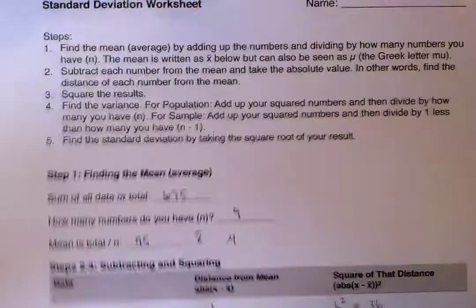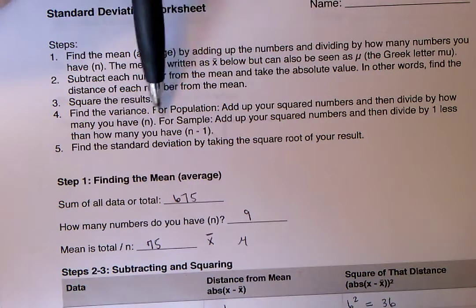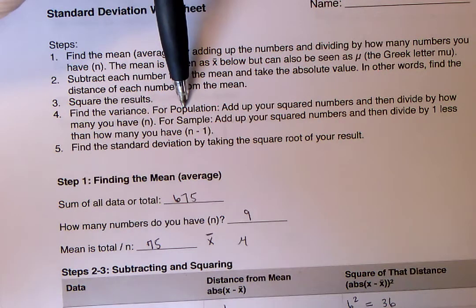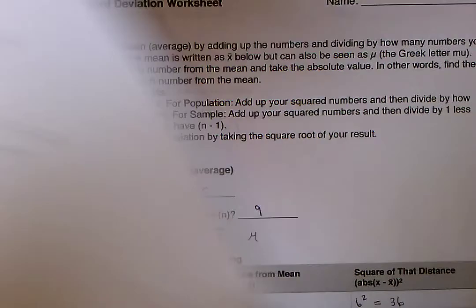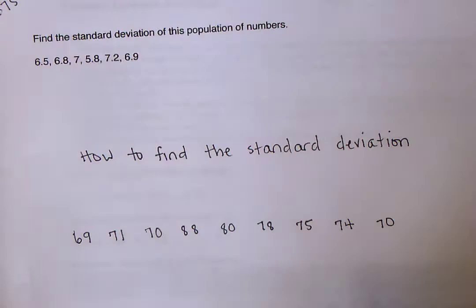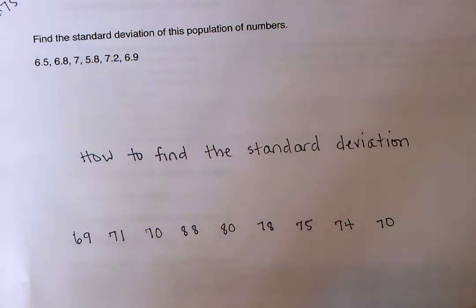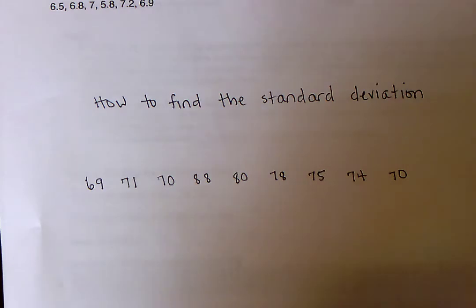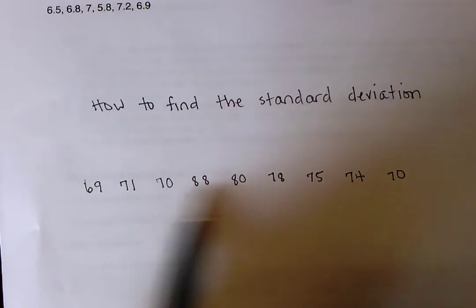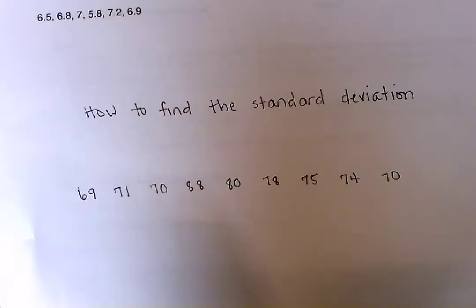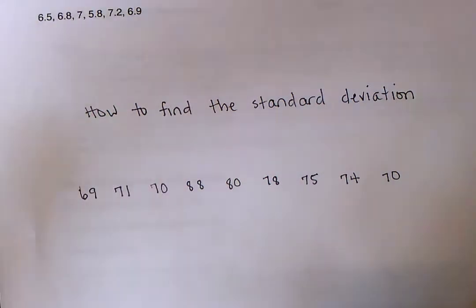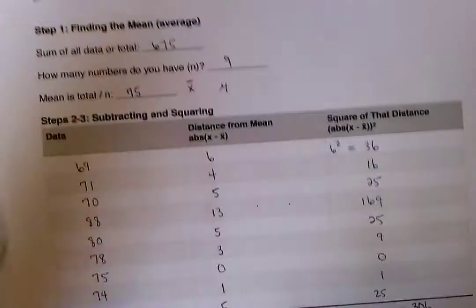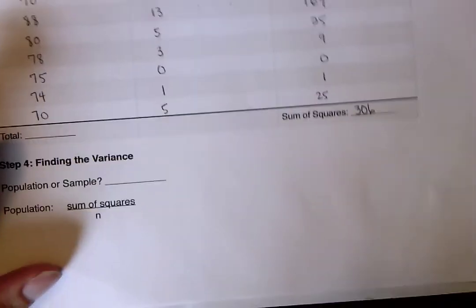So 306 is my sum of all the squares. So step 4, step 4 is find the variance. So for a population, if this set of numbers right here, we're going to do both, actually. We're going to treat it as population or a sample, just to show you. Let's say that, like I said, let's say at first, let's say this is a population.